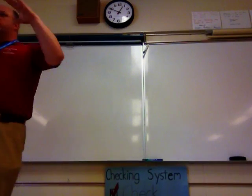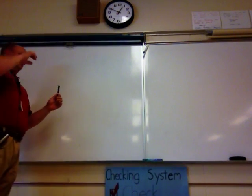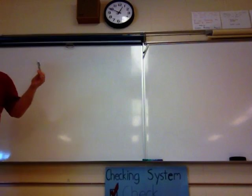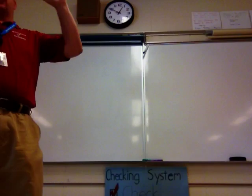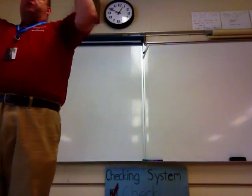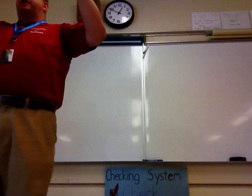How we can find equivalent fractions using our multiplication chart. Simply, all it is is locating your numerator and your denominator on that multiplication chart, whether you look on the top or look on the side, and then just finding the partners that work together.